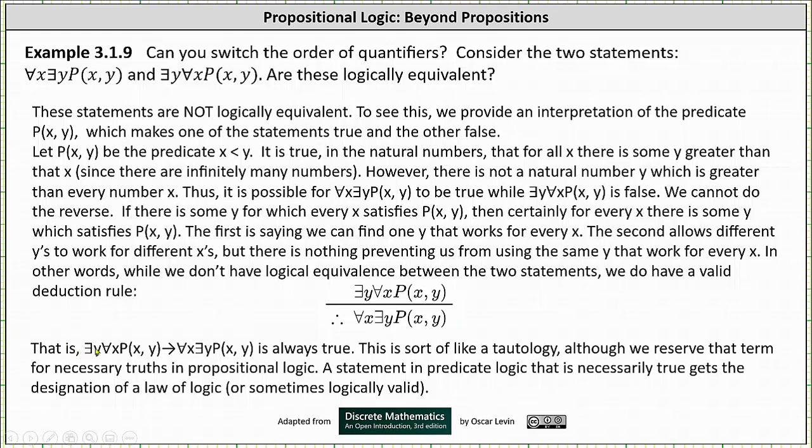That is, if there exists a y for every x such that P(x, y), then for every x there exists a y such that P(x, y) is always true.